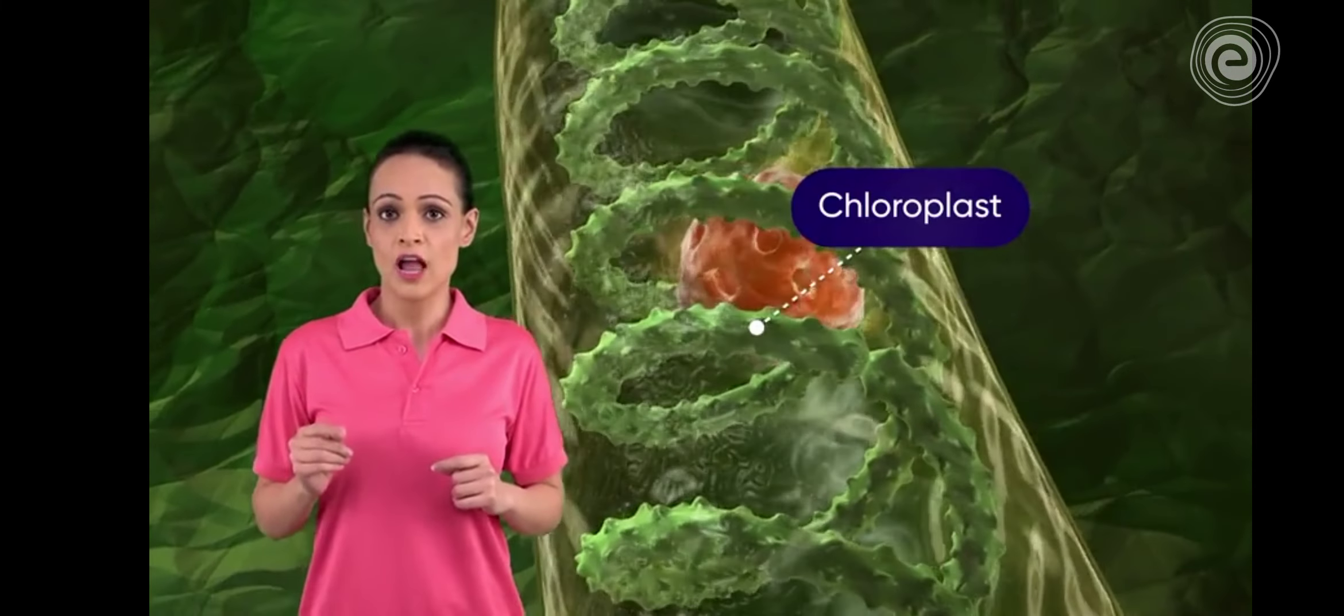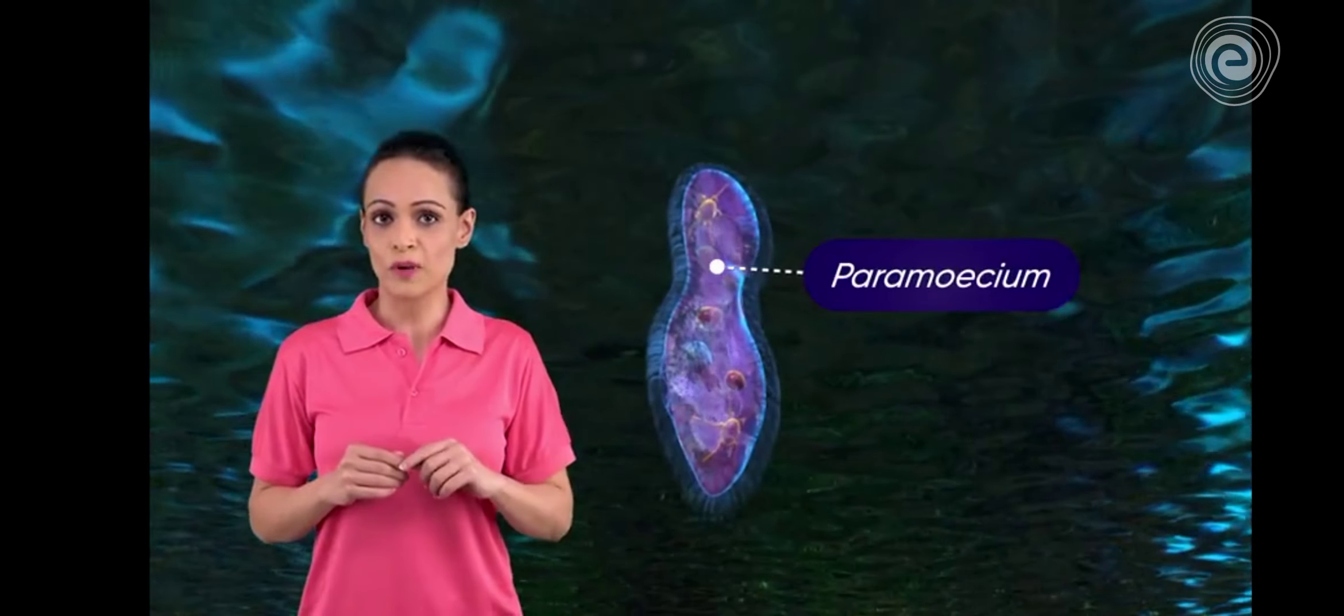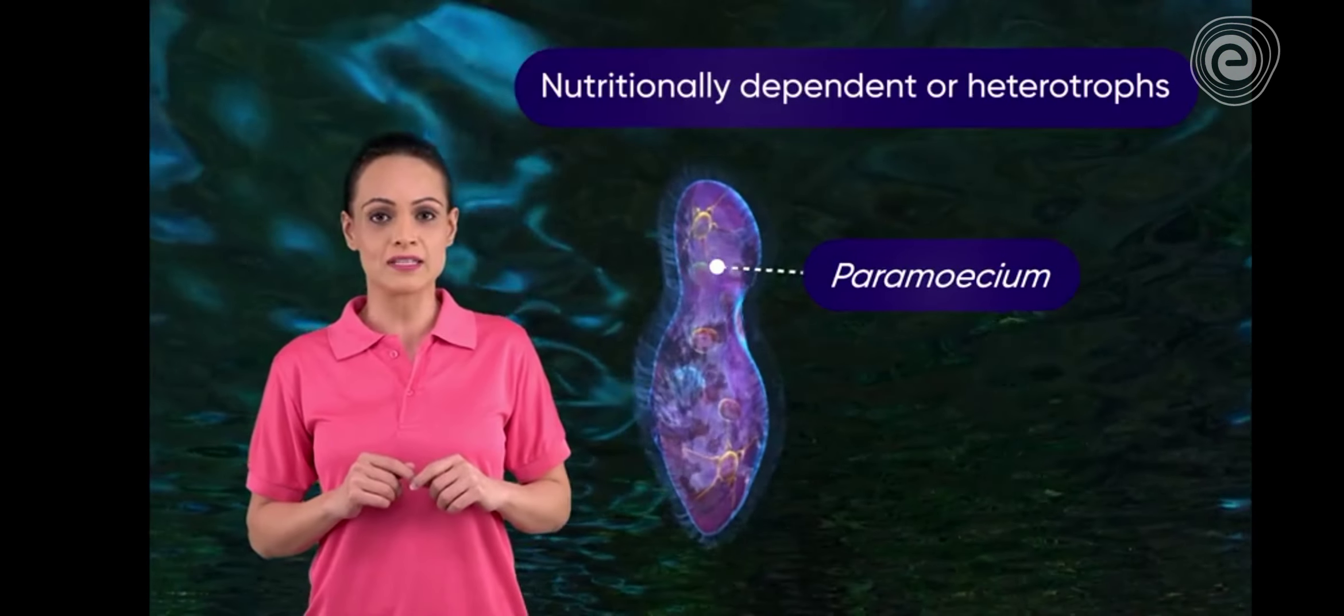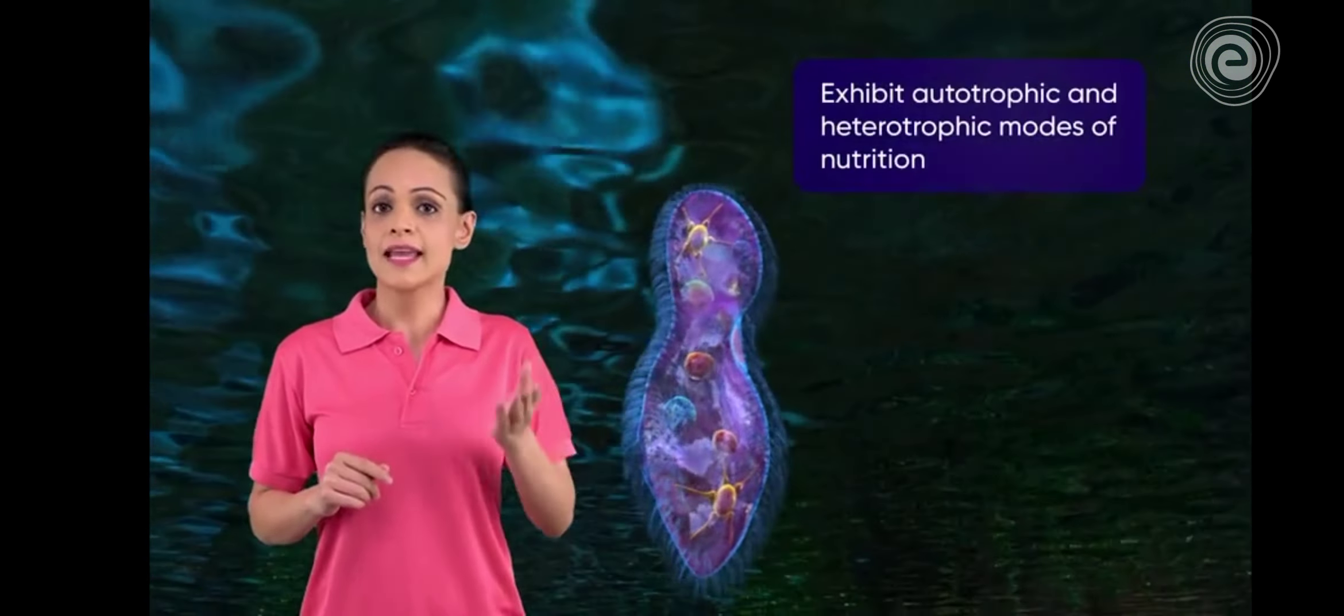Some organisms which have chloroplast with chlorophyll are nutritionally independent, while those without chloroplast are nutritionally dependent. Thus they exhibit autotrophic and heterotrophic modes of nutrition.